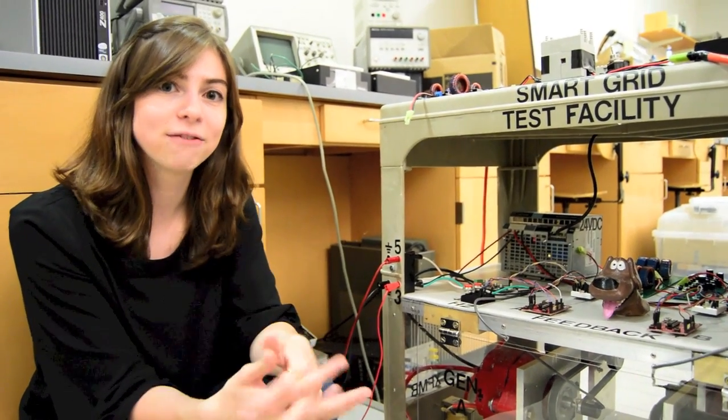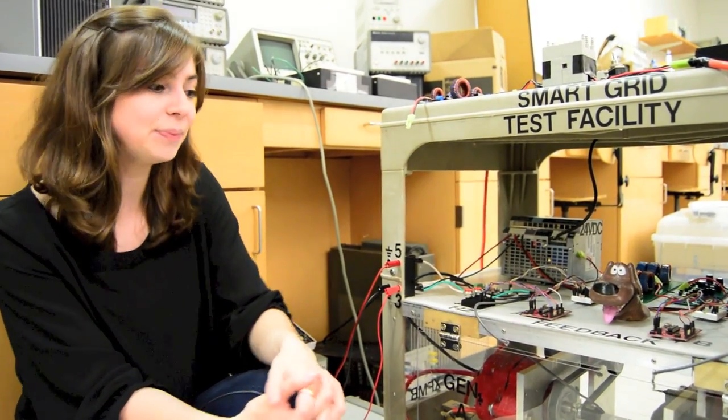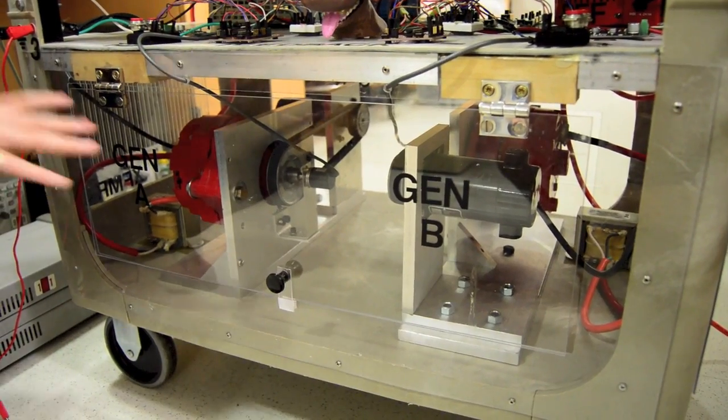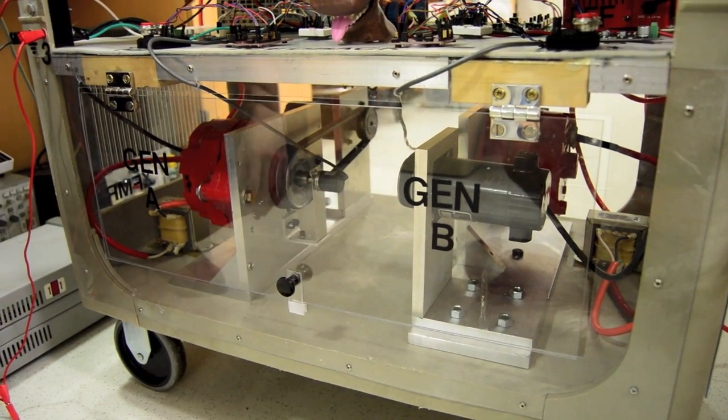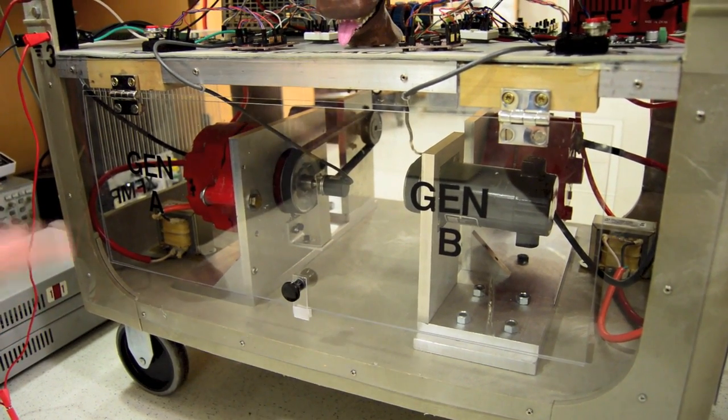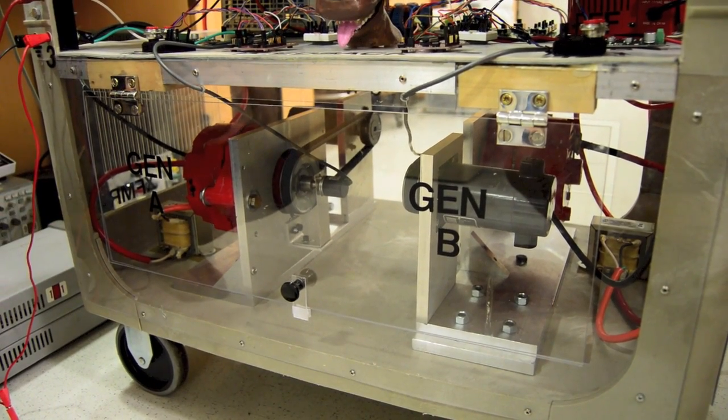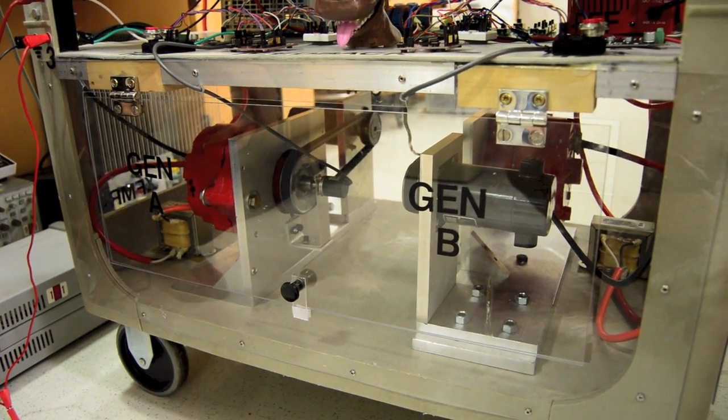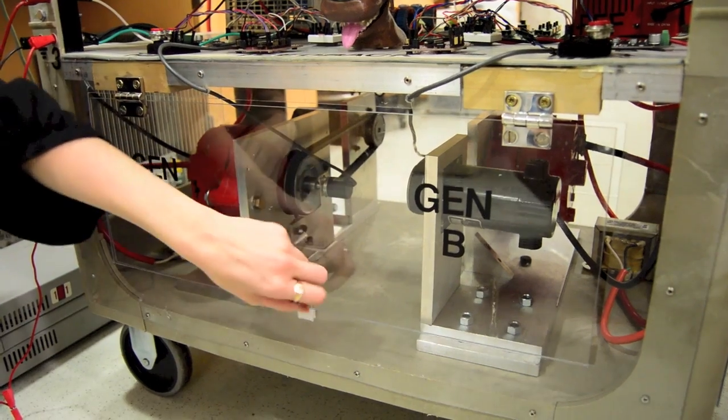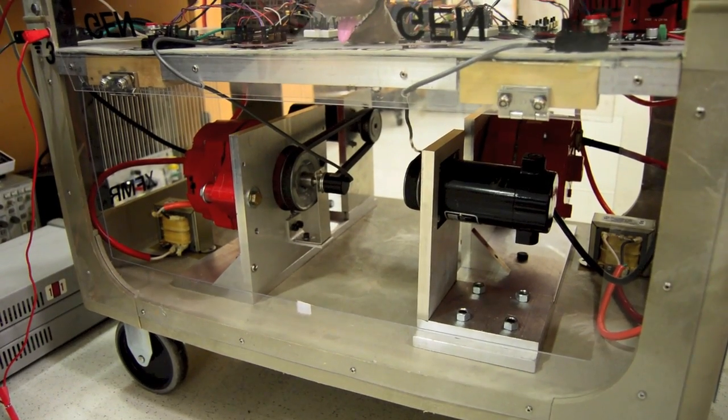As you can see, we have generator A and generator B. They are enclosed in a safety housing so that when the system is operating and things are spinning fast, no one can accidentally touch it or kick it. We have ventilation on the sides for airflow and we can access the generators on both sides of the cart.